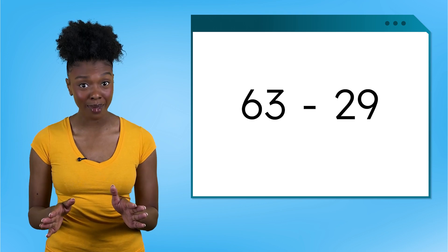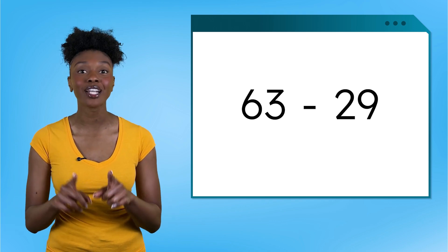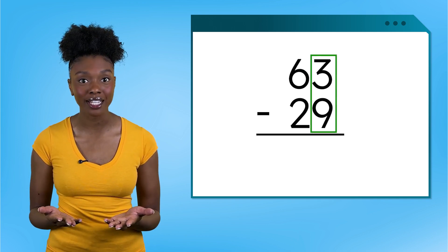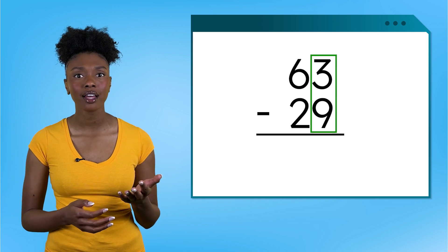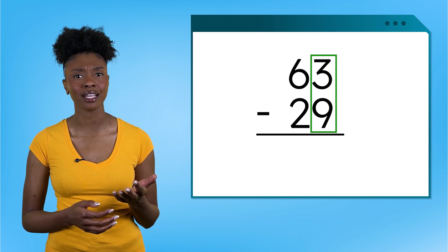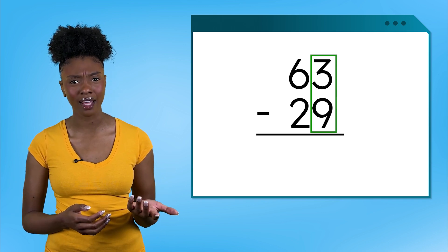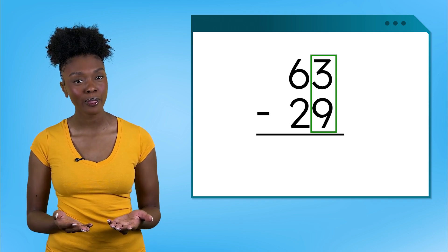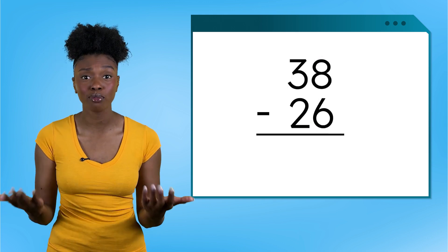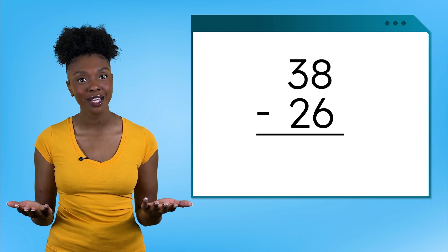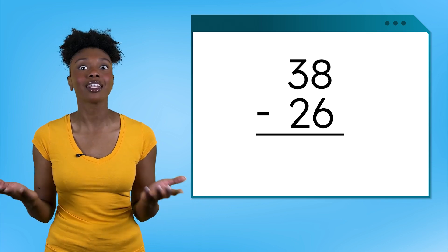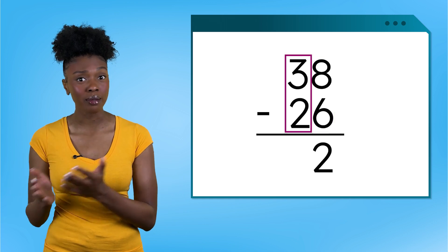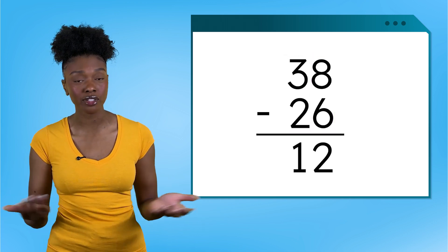We should be able to solve this math quest no problem. First, we'll line up our numbers vertically by place value. Then we'll start in our ones place and subtract 3 minus 9 — and wait a second, 3 isn't big enough to take away 9. It looks like we've discovered a new type of subtraction problem. The subtraction problems we've solved before have always had a bigger number on top, so we could simply subtract each place value. Like in this problem: 8 minus 6 equals 2, and 3 minus 2 equals 1, so our answer is 12.